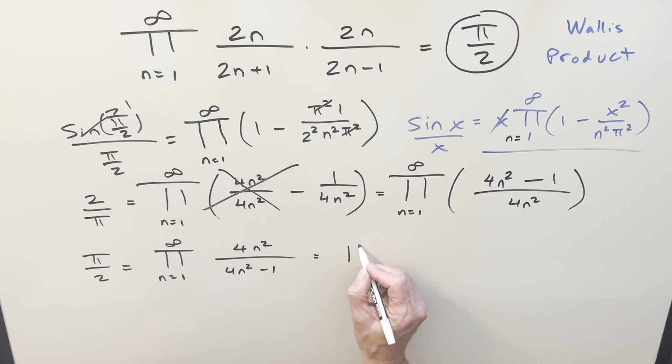But then from here, we can just factor this as difference of two squares. So I can write it as 2 n plus 1 times 2 n minus 1. And 4 n squared, we can write it as 2 n times 2 n. And really, you can express this quite a few different ways. We could have left it like this.